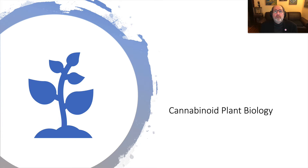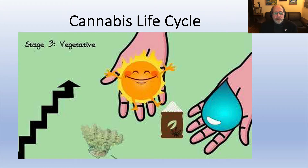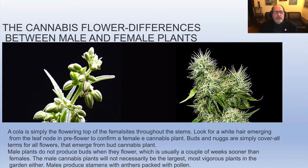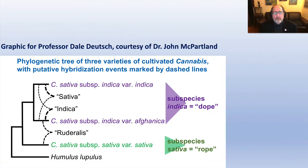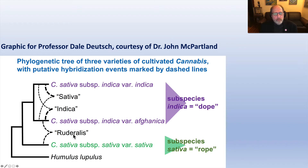Another module we will move on to is cannabinoid plant biology. We'll go through the life cycle from sprouting to harvesting, including the vegetative stages. We'll talk about the differences between male and female plants, and also discuss the taxonomy — the scientific names as well as the more common names: sativa, indica, and ruderalis. Ruderalis is the rope; indica and sativa is the dope.